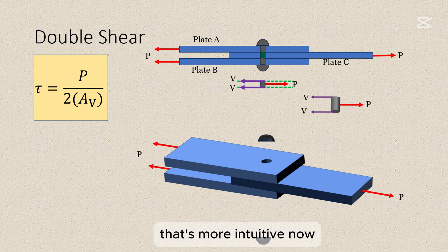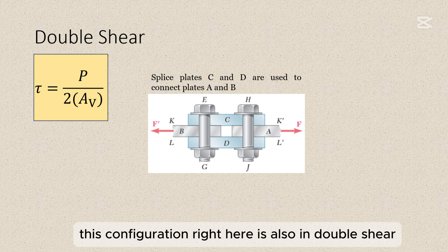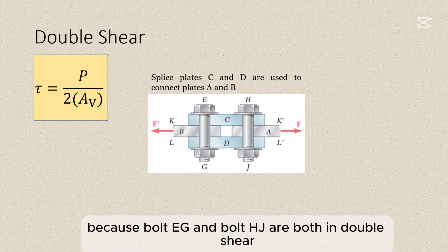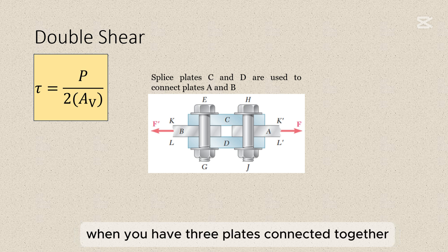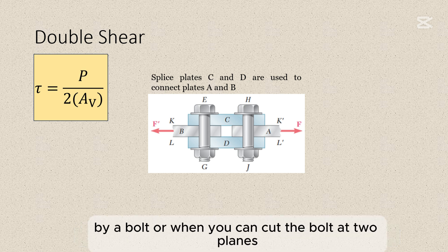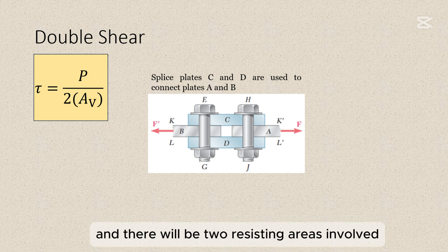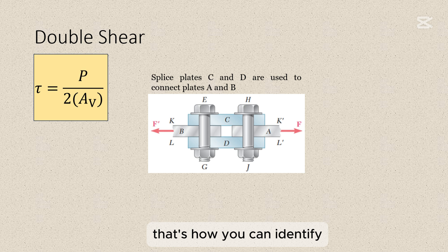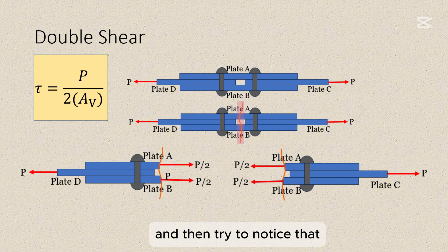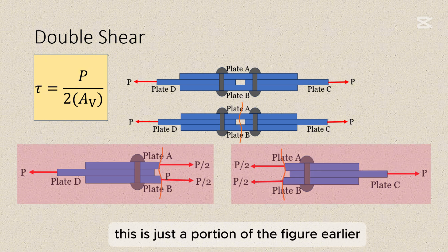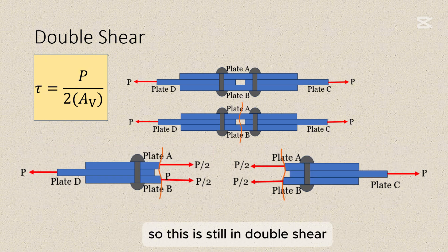Now this configuration right here is also in double shear because bolt EG and bolt HJ are both in double shear. In simpler terms, you can see that the connection is in double shear when you have 3 plates connected together by a bolt or when you can cut the bolt at two planes and there will be two resisting areas involved. That's how you can identify. So we can consider this figure. Let's make a cut at the middle and then try to notice that this is just a portion of the figure earlier. So this is still in double shear.